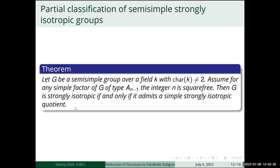Let me quickly give a flavor of the reduction from the semi-simple case to the simple case. The reduction is: G is strongly isotropic if and only if it admits a simple strongly isotropic quotient. One direction is already known: if G admits a strongly isotropic quotient then by the lemma about surjective homomorphisms, G is strongly isotropic as well. The main problem is to show that if G is strongly isotropic then it does admit some simple strongly isotropic quotient.